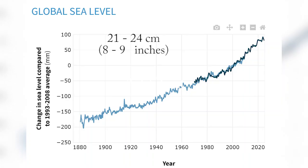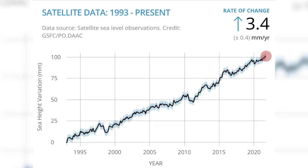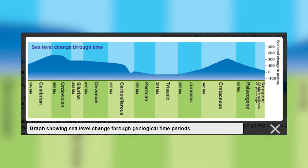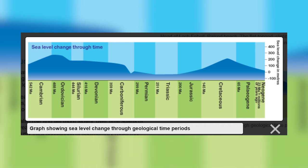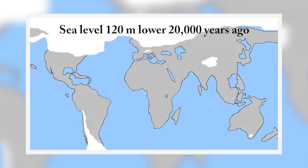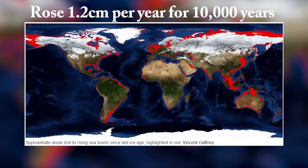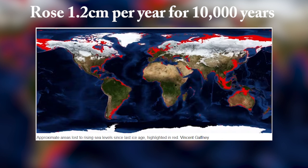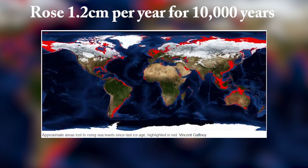Global mean sea level has risen about 21 to 24 centimetres since 1880. Satellite data measurements from the past 30 years show that the current rate of sea level rise is 3.4 millimetres per year, and that this rate is expected to accelerate. During the peak of the last ice age, about 20,000 years ago, sea level was about 120 metres lower than today. Then as the ice age ended and the ice sheets melted, sea level rose at a rate of about 1.2 centimetres per year for 10,000 years until it levelled off at roughly today's position.